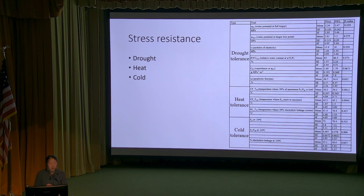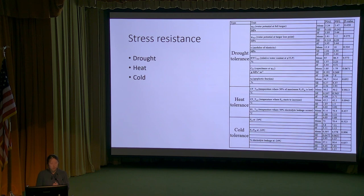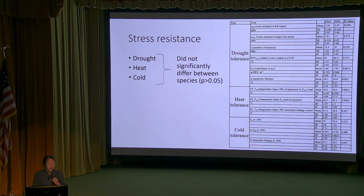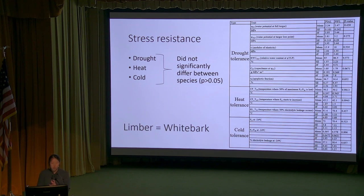Our final results focused on the slow conservative traits - the stress resistance traits. We measured drought tolerance, heat tolerance, and cold tolerance, and found that these measurements did not significantly differ between species. In other words, stress resistance between whitebark and limber pine did not significantly differ - neither was greater than the other.